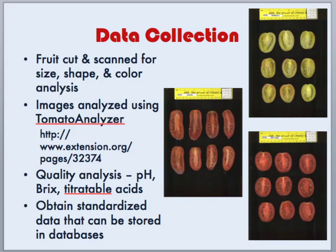We can see here that there was a range in both size and shape of the processing fruit, as well as in color. In the top corner you can see a yellow tomato that may be of the Harvest Gold type variety.